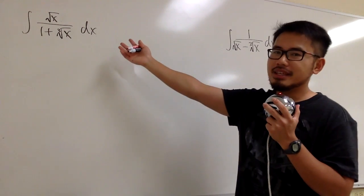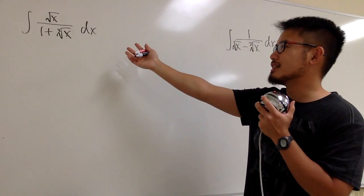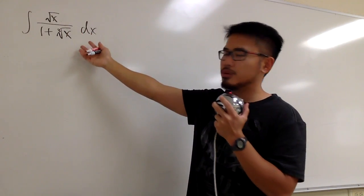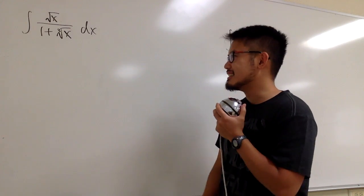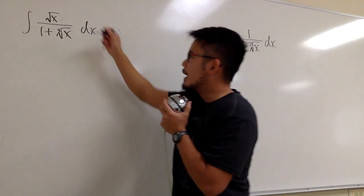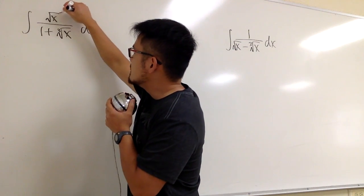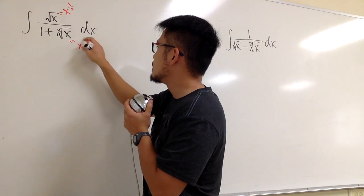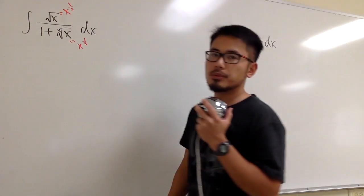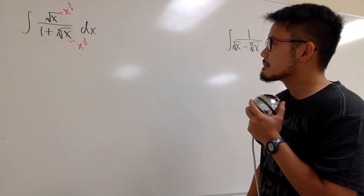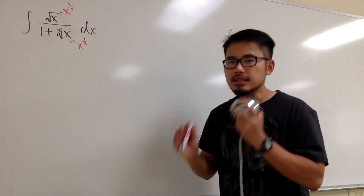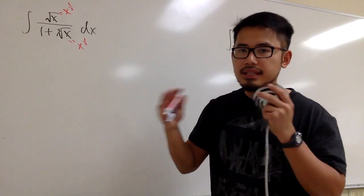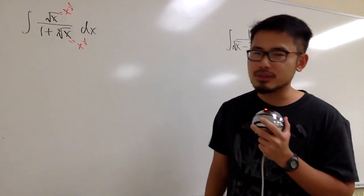So we are looking at this integral. Wouldn't it be nice if we don't need to deal with the square root and the cube root? That would be so nice. How can we do that? Well, the square root of x is x to the 1/2 power, and the cube root is x to the 1/3 power. Is it possible to plug something in for x so that at the end we don't need to deal with fraction exponents?